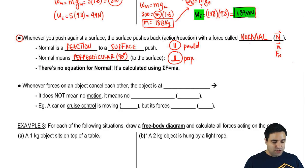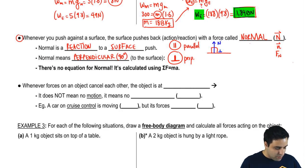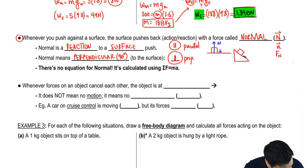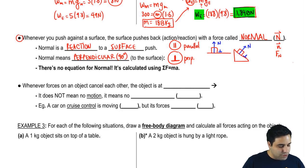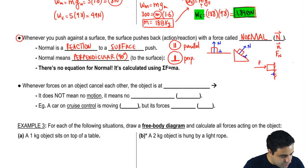To figure out the direction of the normal force, if you have a box on a surface, put the perpendicular symbol on the surface and the direction it points is the direction of the normal force. For a tilted surface, the normal force points perpendicular to that surface. If you have a vertical wall and a box pushed against it, the wall pushes back with a normal force pointing away from the wall horizontally.